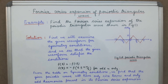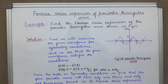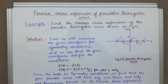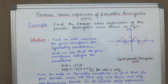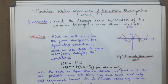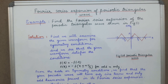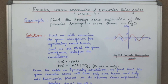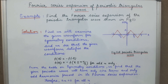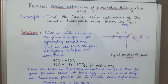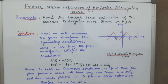Hello everyone. In the previous class we discussed the various symmetry properties of a given periodic wave, and also the characteristic properties of the periodic wave for each condition of symmetry. In today's video we will find out the Fourier series expansion of a periodic triangular wave by examining its conditions of symmetry.